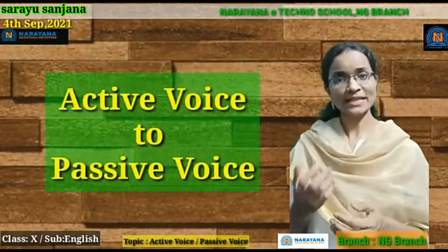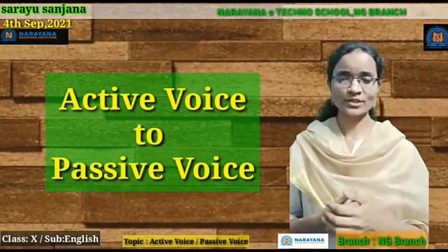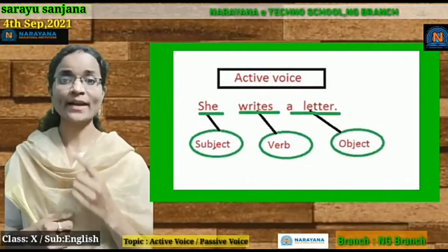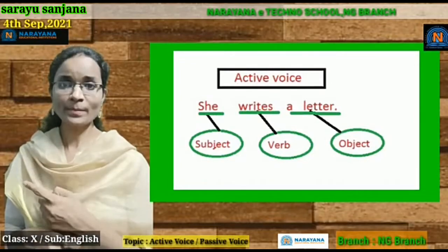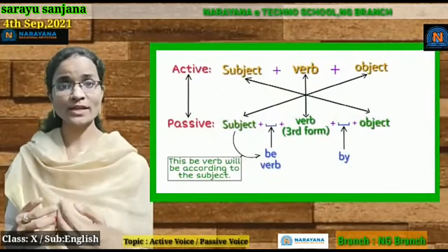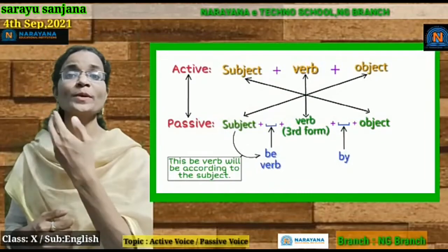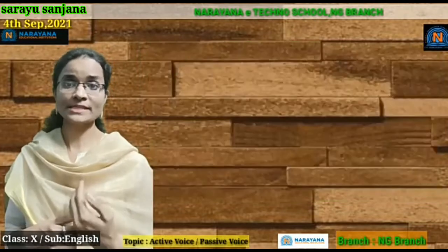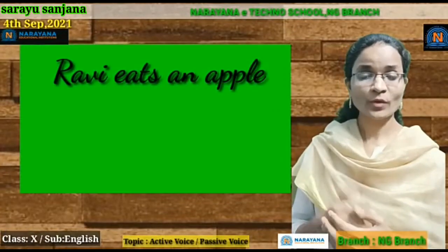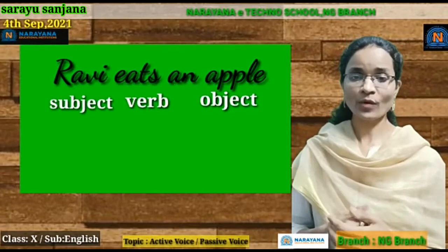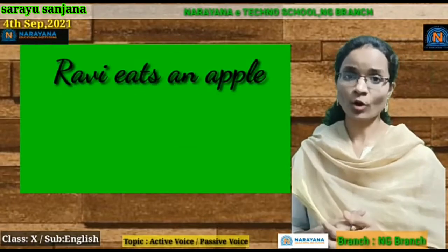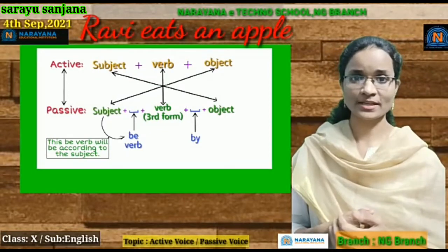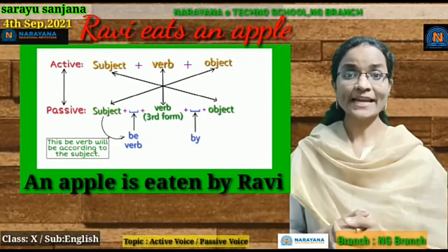While changing a sentence from active voice into passive voice, we need to follow certain rules. First, we need to underline the subject, verb, and object in the given sentence. In passive voice, the subject is going to be modified into the object, whereas the object is going to come into the place of the subject. For example: Ravi eats an apple — Ravi is the subject, eats is the verb, and an apple is the object. In passive voice, an apple becomes the subject, followed by an auxiliary verb — is, am, or are — depending on the tense.